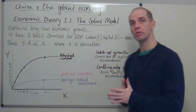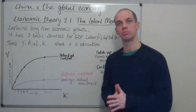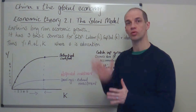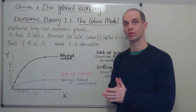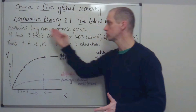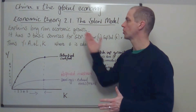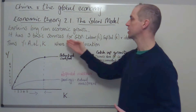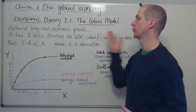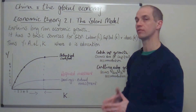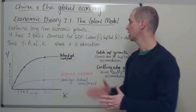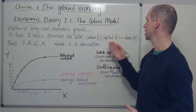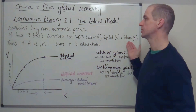This is known as the Solow model, pioneered by Robert Solow, a famous Nobel Prize winning economist. It helps to explain long-run economic growth and it has three basic sources for deriving output, or the level of GDP. They are Labour (L), Capital (K), and Ideas (A).